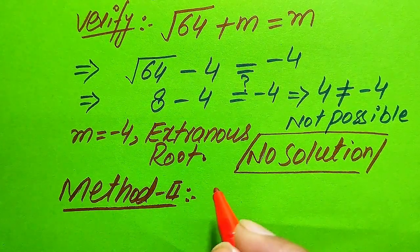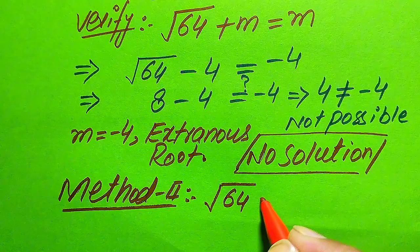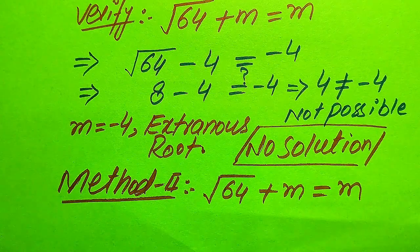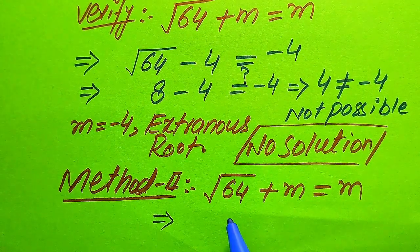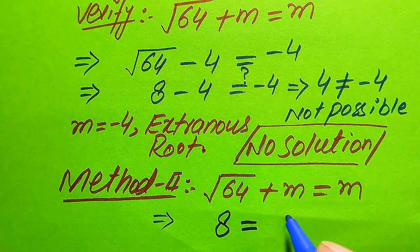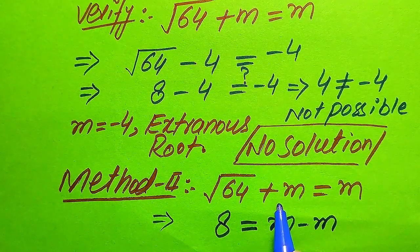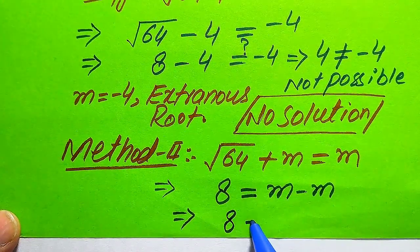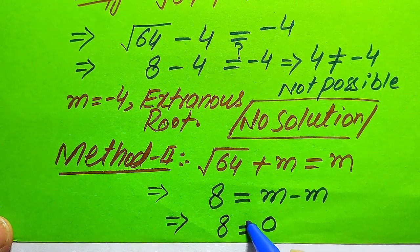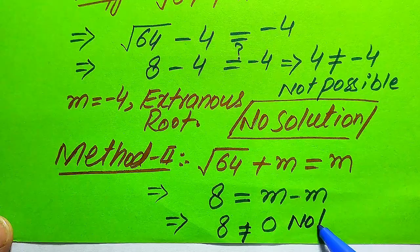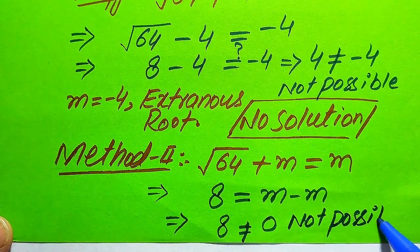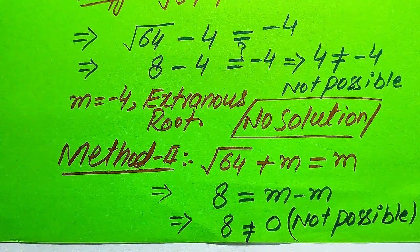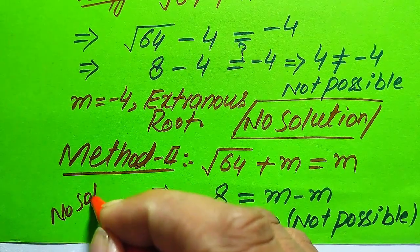Now we solve this problem using the second method. Starting from square root of 64 plus m equals m, we know square root of 64 is 8, so 8 plus m equals m. Moving m to the right-hand side gives 8 equals m minus m, which equals 0. Since 8 does not equal 0, this is not possible, and we cannot find any value of m satisfying the equation. Therefore, this equation has no solution.